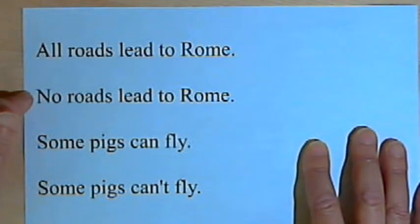If I have something like no, no roads lead to Rome, all I have to do is find at least one road that does lead to Rome, and this statement will be negated. So if I start with no roads lead to Rome, I can say some roads do lead to Rome, or there's at least one road that leads to Rome, and that would negate this statement.